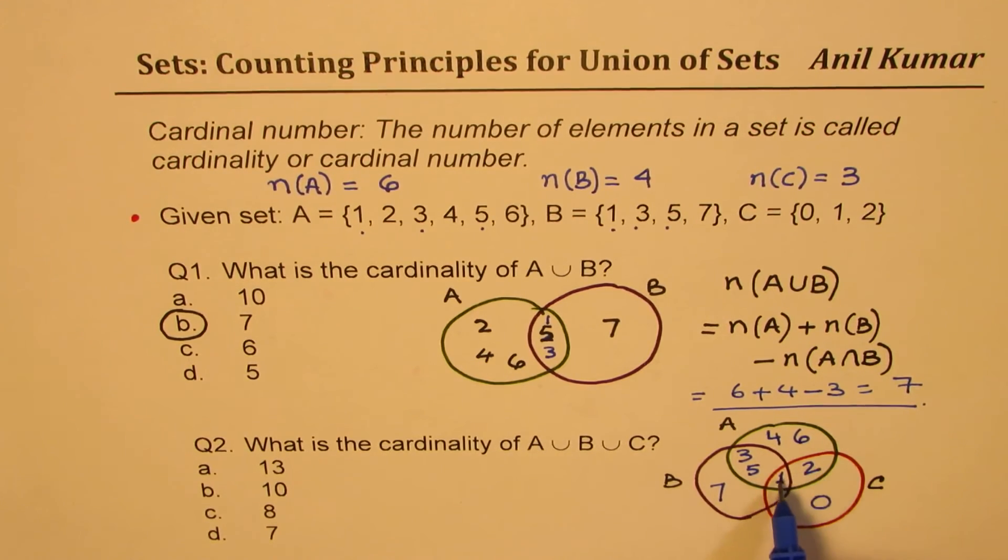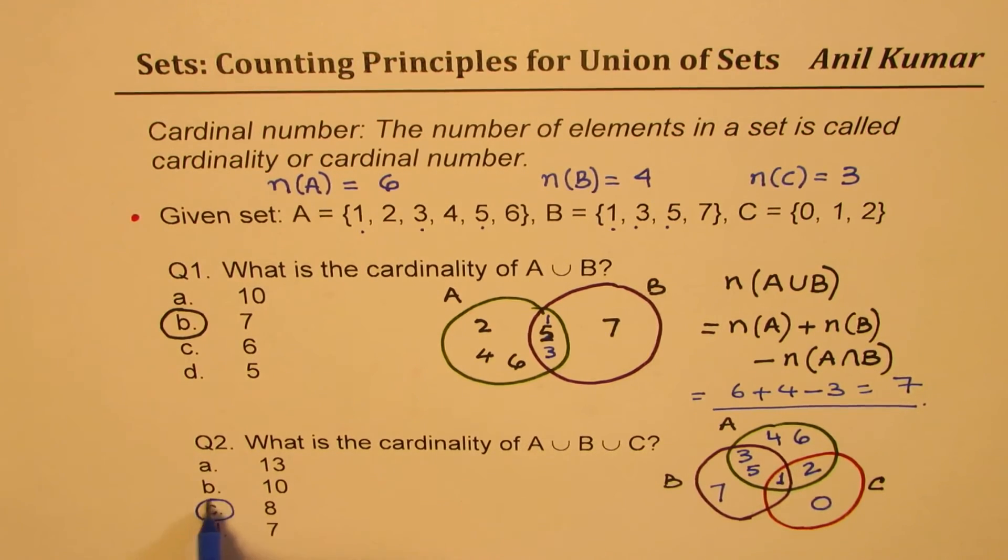Now, the question is, what is the cardinality of A union B union C? Just count all these elements. One, two, three, four, five, six, seven, and eight. So, the answer is C for us, correct?